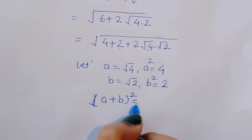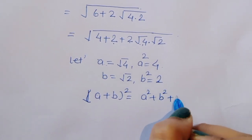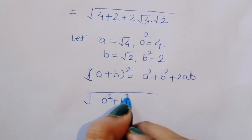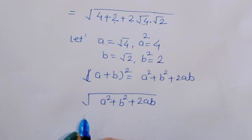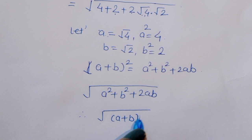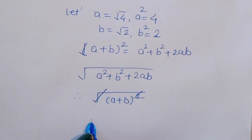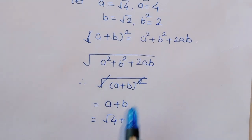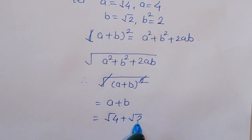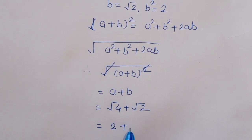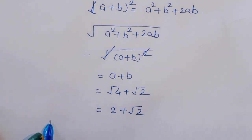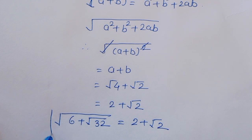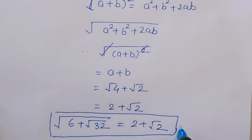This is in the form of a plus b whole squared, since we know a squared plus b squared plus 2ab equals a plus b whole squared. Taking the square root cancels the square, giving us a plus b. Substituting, that is square root of 4 plus square root of 2, which equals 2 plus square root of 2. So the value of square root of 6 plus square root of 32 is 2 plus square root of 2. Thank you.